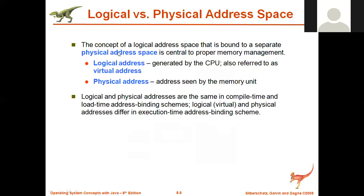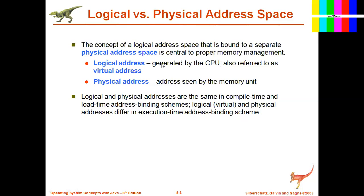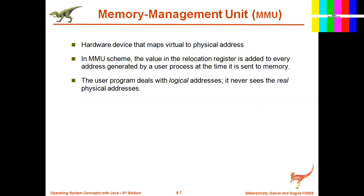Let's look at the difference between logical address and physical address. Physical address is the actual address in your memory unit. The logical address is the one generated by the CPU — because the CPU can directly access only main memory, it generates addresses assuming data is present in main memory, even if the data is actually in secondary storage. That is why it is called a logical address or virtual address. Physical address is the actual address from where we access the memory.